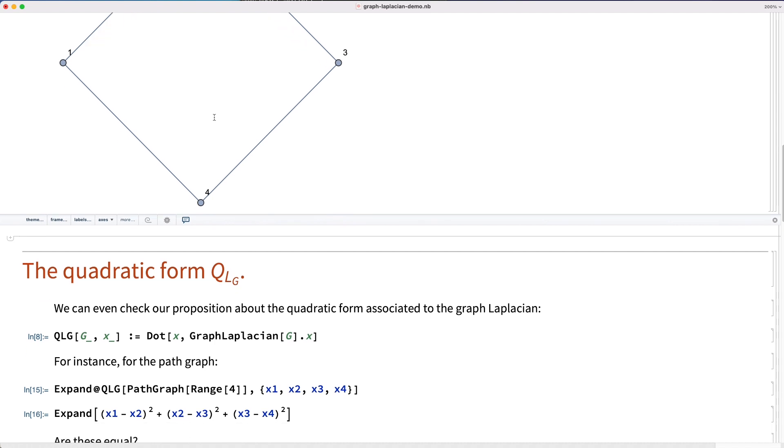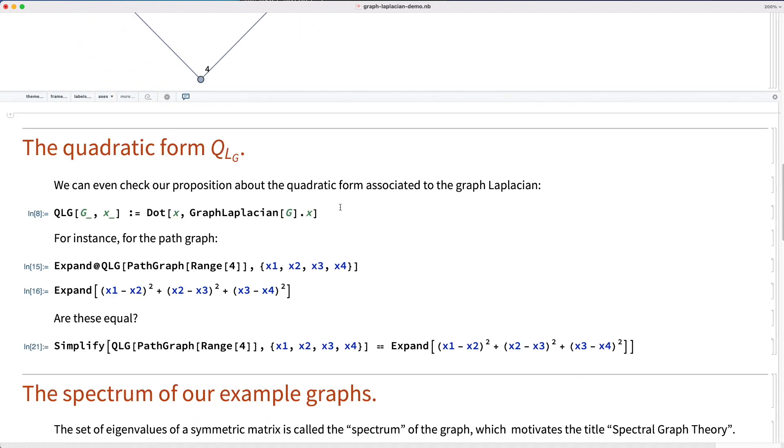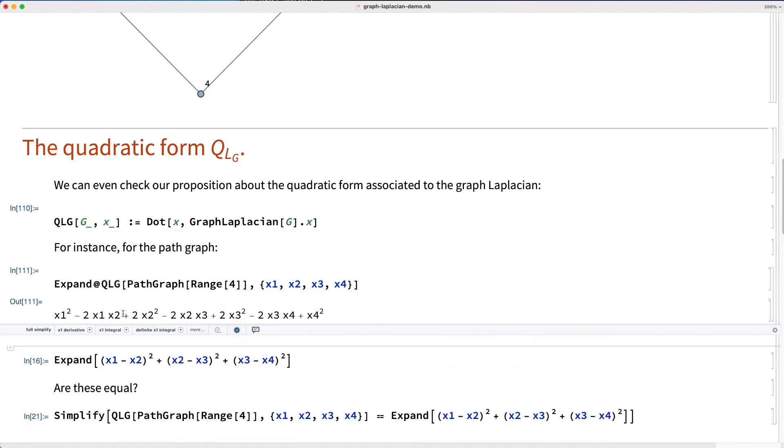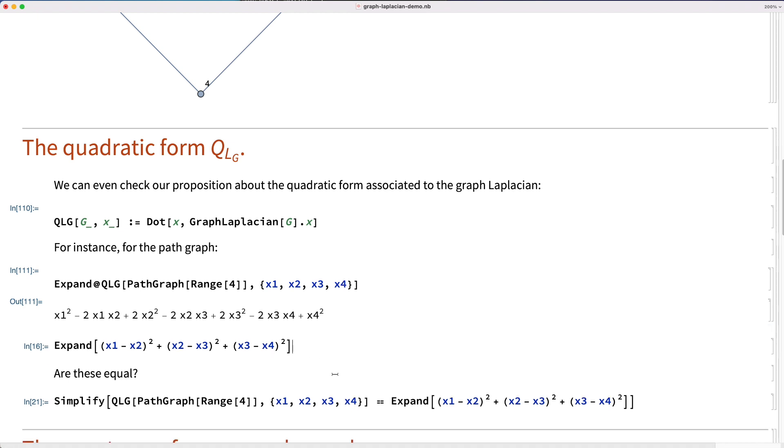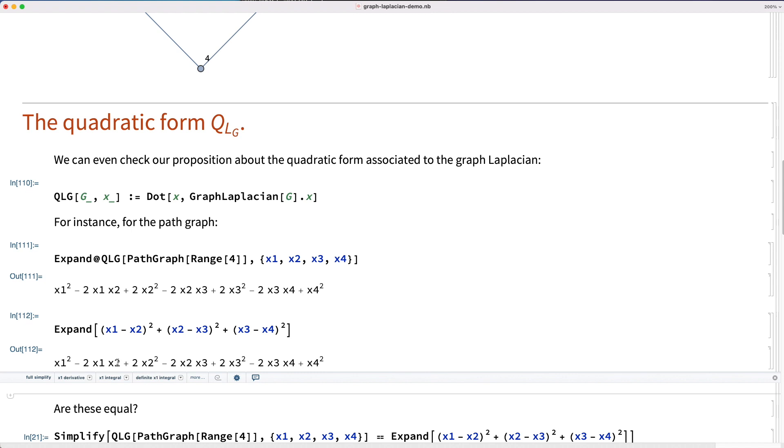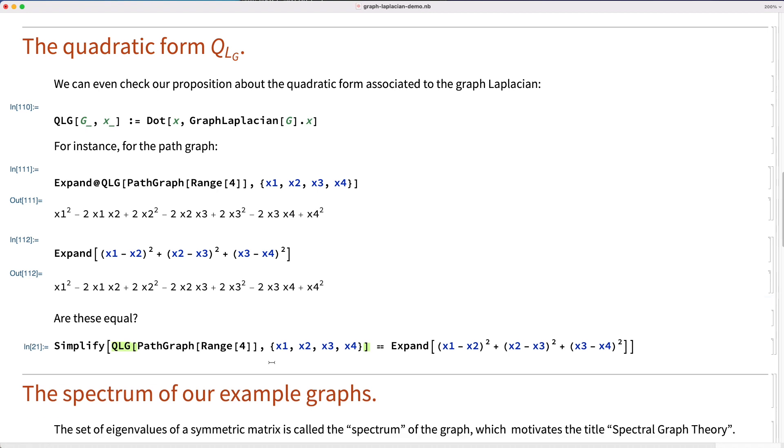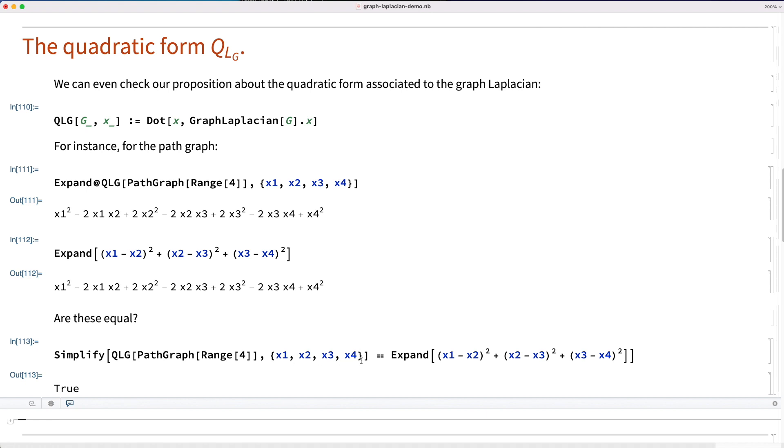Now let's look at our proposition about the quadratic form in the graph Laplacian. Remember we defined QLG to be the dot product of x and the graph Laplacian multiplied by x. For instance for the path graph, that's this quadratic polynomial in entries x1, x2, x3, and x4 at the vertices. If we compare that to what we think it is, x1 minus x2 squared plus x2 minus x3 squared plus x3 minus x4 squared, we get some other quadratic polynomial, and they're exactly equal.